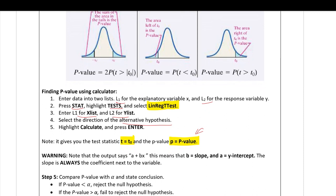Note that the calculator output says A plus BX. The number next to the X is always the slope — so B will be the slope and A will be the Y-intercept. Don't memorize which letter is which; just look at the coefficient next to the X, and that will be the slope.